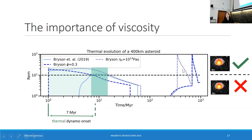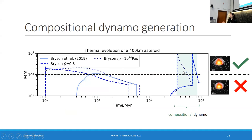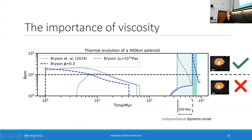Over here, the second set of dynamos — these are compositional dynamos. Later in the body's history, the mantle has stopped convecting and is conducting. But eventually the core begins to solidify, and as it does we may be able to generate fields through compositional convection. We can see here that two of our models generate a dynamo at the same time, but there's a 450 million year difference between the onset time of this compositional dynamo and the onset time of the other. Again, this is just taking three different models with different viscosity profiles — so it's quickly becoming apparent that viscosity is important for when dynamos can start and stop.